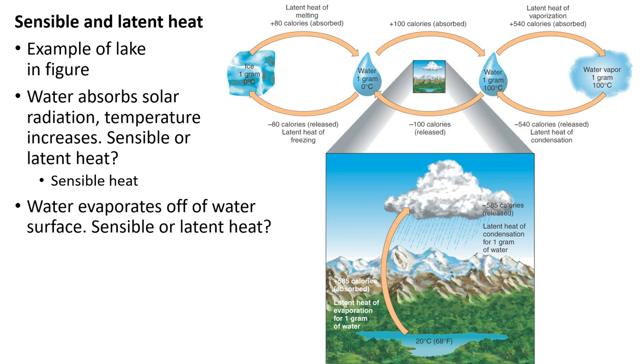When we have this water absorbing solar radiation, some of that is actually going to evaporating off of that water surface. We can question, once again, is that sensible or latent heat? Hopefully you can tell me that in this case, because we're changing states of matter, it is latent heat. That's one example of how we can keep these separate.